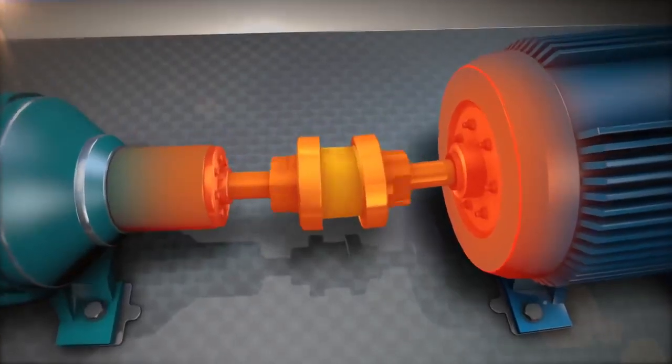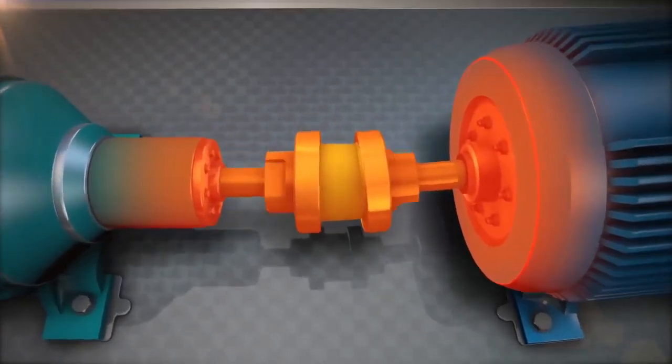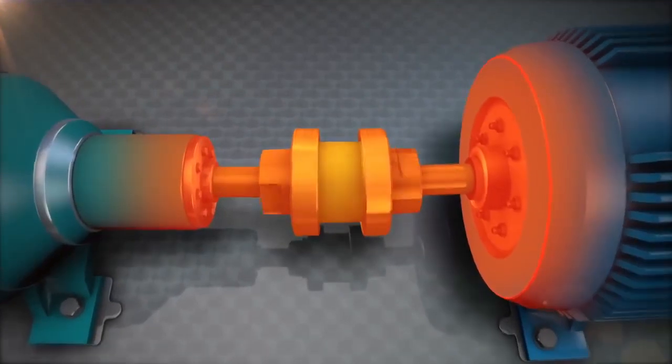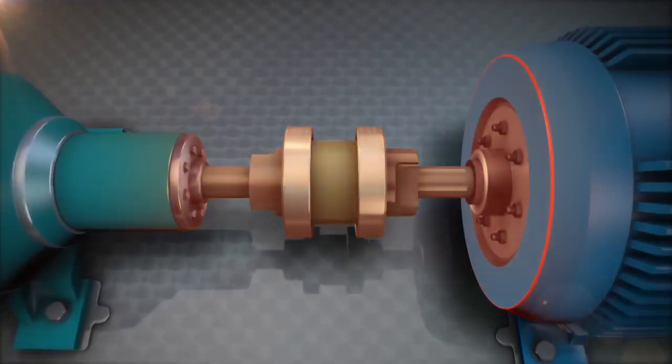Misalignment of the shafts causes vibration in both machines. This will damage the bearings, seals, coupling, or other machine components.